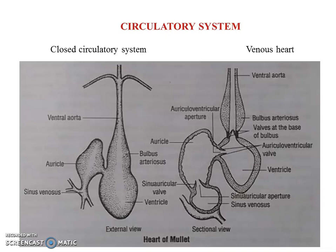The heart is always filled with deoxygenated blood, and hence this kind of heart is referred to as the venous heart. Fishes do have a venous heart because the chambers are always filled with deoxygenated blood, and this venous heart is actually a characteristic feature of fishes.